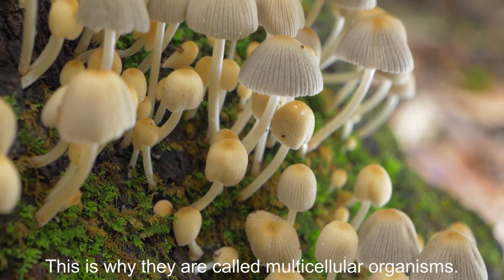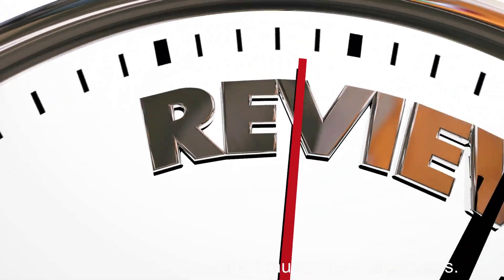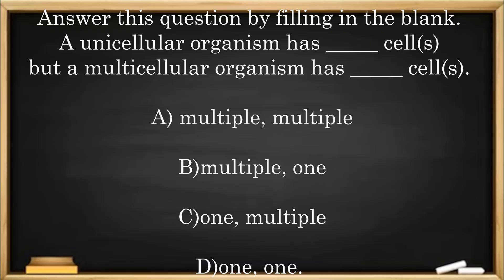Let's take a pause to make sure we all understand everything before moving forward. Answer this question by filling in the blank: A unicellular organism has blank cells, but a multicellular organism has blank cells. A: Multiple, Multiple. B: Multiple, One. C: One, Multiple. D: One, One. The answer is C.